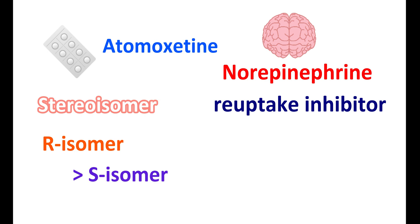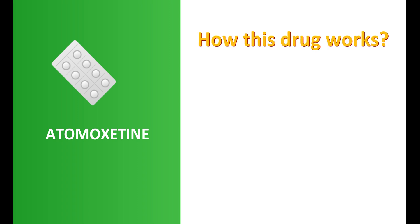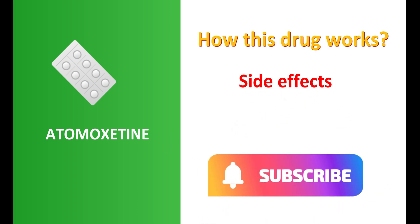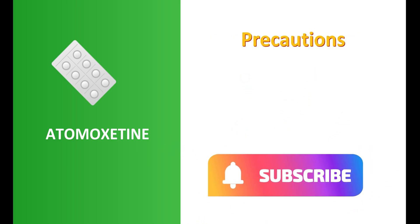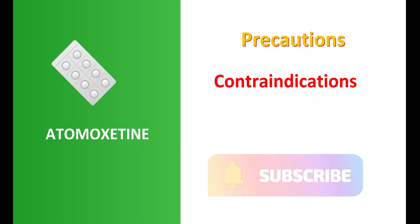Atomoxetine can be used both in adults as well as in children, however it is not recommended for children under six years. Today in this video we are going to discuss the important facts about this medication: how this drug works, what are the important side effects, the doses, important precautions, and contraindications.